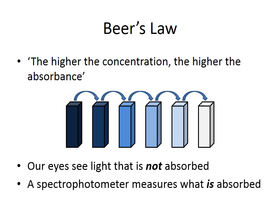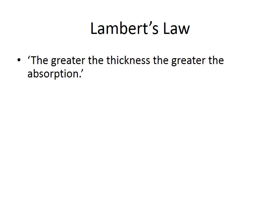A spectrophotometer is actually measuring the amount of light that is absorbed as it passes through the sample. The second law is Lambert's Law, which states that the greater the thickness the greater the absorption. If we have a sample of a known width, as light travels through that sample, the further it goes the more light is absorbed. So the thicker the sample, the greater the amount of light absorbed as it passes through.